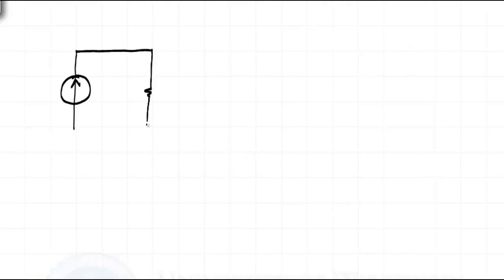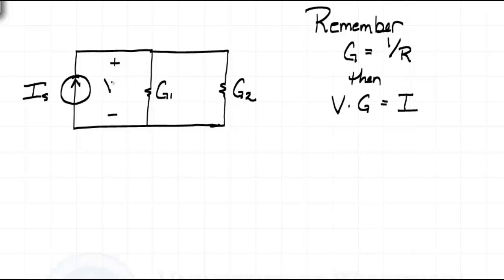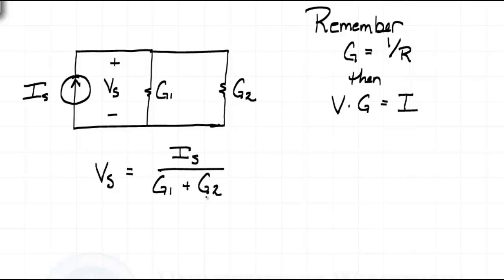How about parallel elements? They have the same voltage across them. There's a similar principle that applies to parallel conductances and a known current going into the combination. Let's look at an arbitrary current source connected in parallel with two parallel conductances. As a reminder, conductance is the reciprocal of resistance. We can write Ohm's law in terms of conductances as voltage times conductance equals current. We only have two nodes in the circuit, so we only have one voltage — I'll call it Vs. Using Ohm's law and the concept of equivalent conductance, the voltage will be the source current divided by the equivalent conductance: Vs equals Is divided by the quantity G1 plus G2.